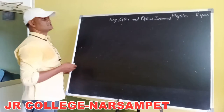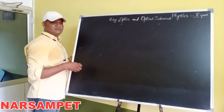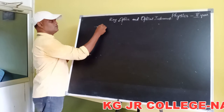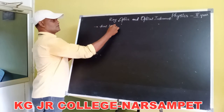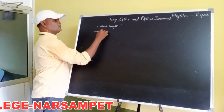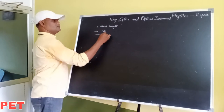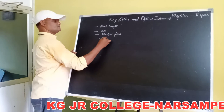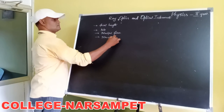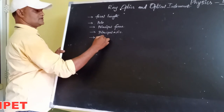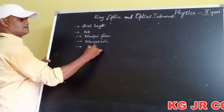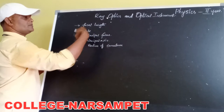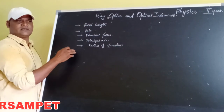In previous classes we discussed about what is the spherical mirror and what are the basic terms associated with the spherical mirror. We know that we have discussed topics like focal length, what is form, what is principal focus, what is principal axis, what is radius of curvature. So these topics are already discussed in previous classes.